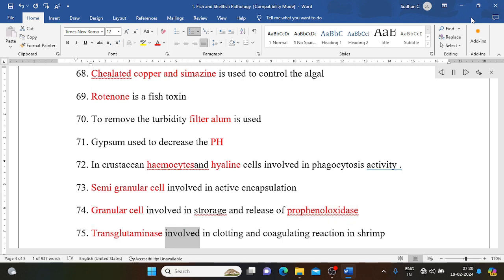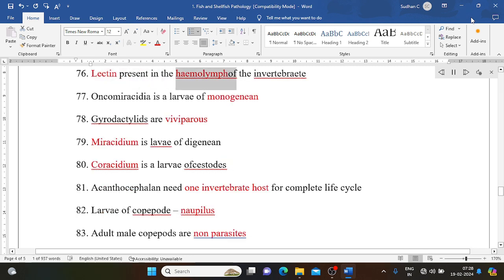Transglutaminase involved in clotting and coagulating reaction in shrimp. Lectin present in the hemolymph of invertebrate. Oncomiracidia is a larvae of monogenean.